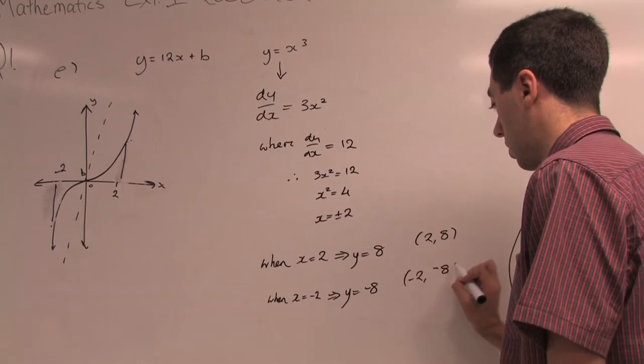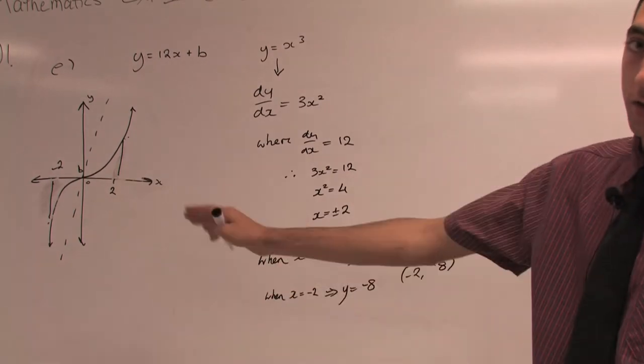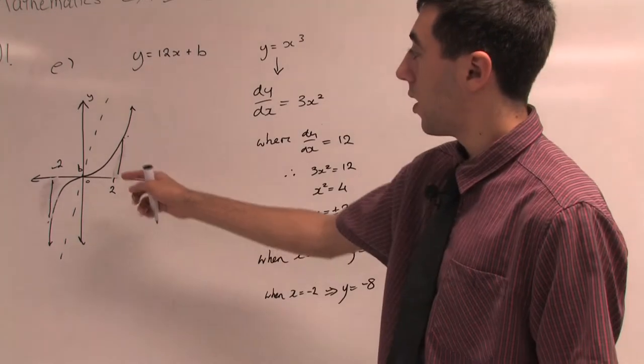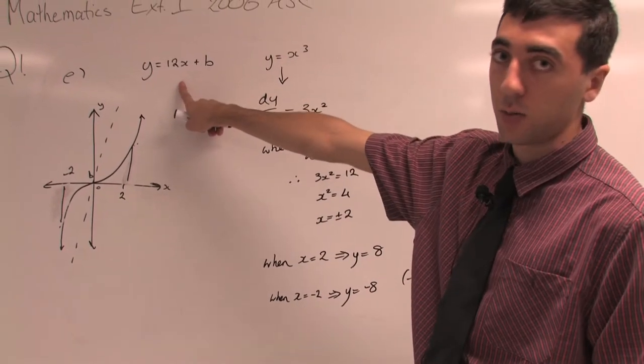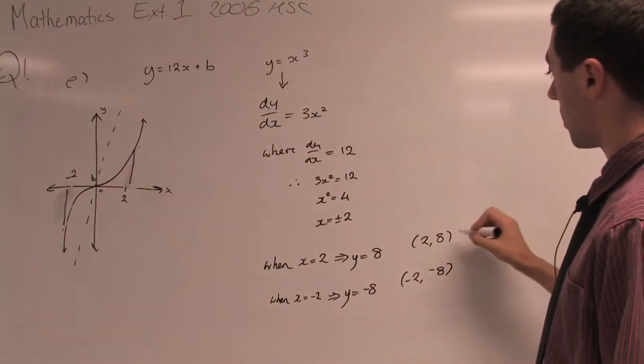Since these are points on the graph and we know that the line is tangent to that graph, then these points must also lie on y = 12x + b. So now we substitute these points in.